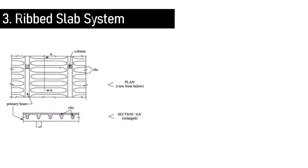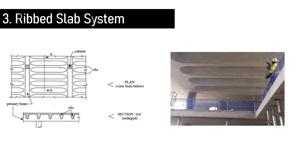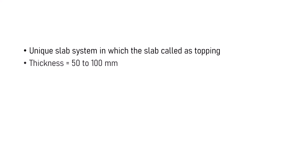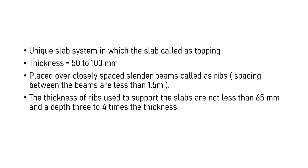Ribbed slab system. This is a unique slab system in which the slab, called the topping, is thin — 50 to 100 mm — and placed over closely spaced slender beams called ribs. The spacing of the ribs is less than 1.5 meters. The thickness of the ribs used to support the slabs is not less than 65 mm, with a depth 3 to 4 times the thickness. A ribbed slab system is also called a grid slab. It can be constructed as a one-way or two-way system; the two-way ribbed slab is called a waffle slab system. It can be constructed either cast-in-situ or pre-cast.